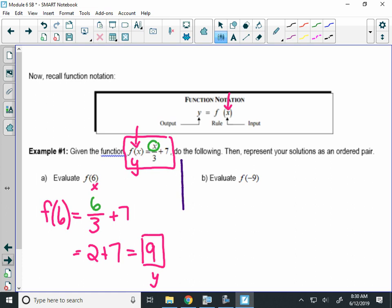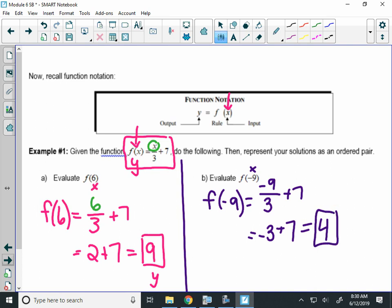Alright, same thing here for B. To find f of negative 9. The negative 9 is in the parentheses, so it's the x. You're going to take negative 9 over 3 plus 7, which is negative 3 plus 7, equals 4. And that 4 is the output or the y value.